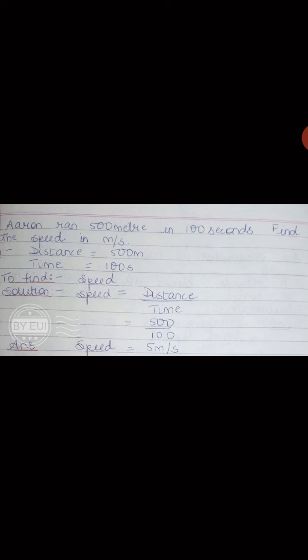To find speed, we write the formula: speed equals distance divided by time. Substituting the values: 50 divided by 100 gives us 0.5. Since distance was in meters and time was in seconds, the units of speed are meters per second. So the speed of Aaron is 0.5 meters per second. In this way, we can find speed using the formula distance divided by time, with units in kilometers per hour or meters per second.